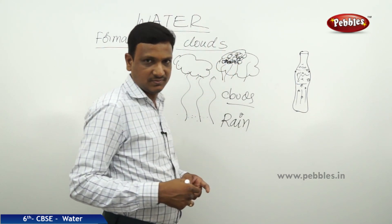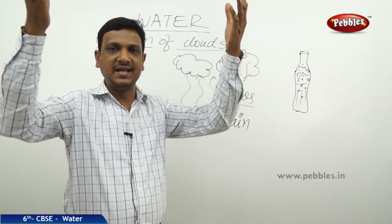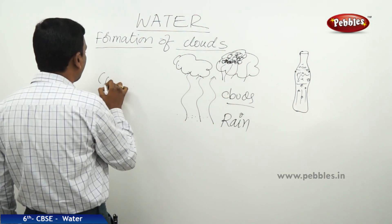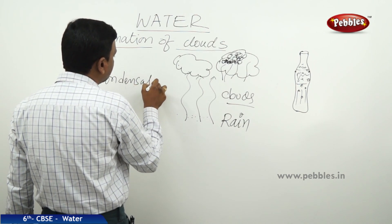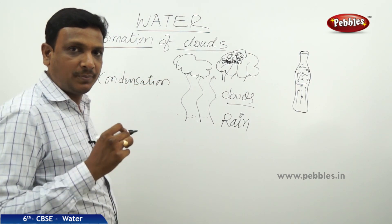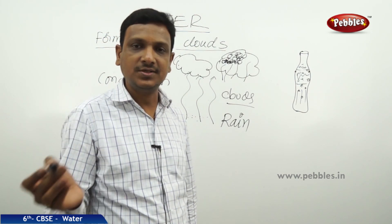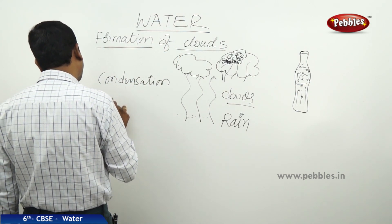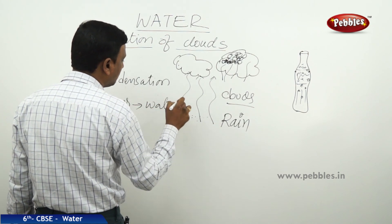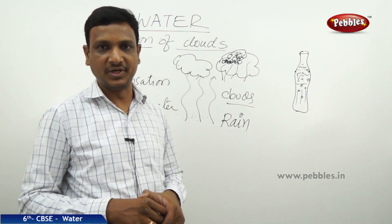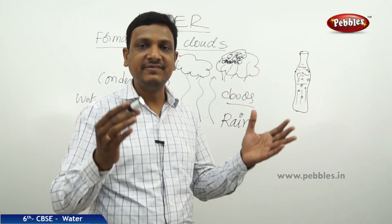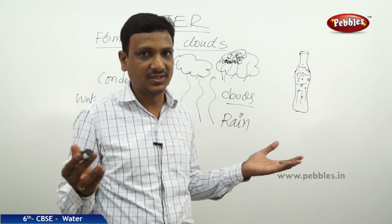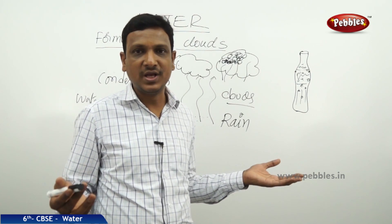Rain is nothing but water drops falling from the height where clouds are formed. Clouds are formed because of condensation. Evaporation is the process in which water turns to water vapour; condensation is the reverse — water vapour turns back to water. Because of condensation, heavier drops of water collect and fall down as rainfall. The place of evaporation and the place of condensation are different, which is why we get rain in certain areas.